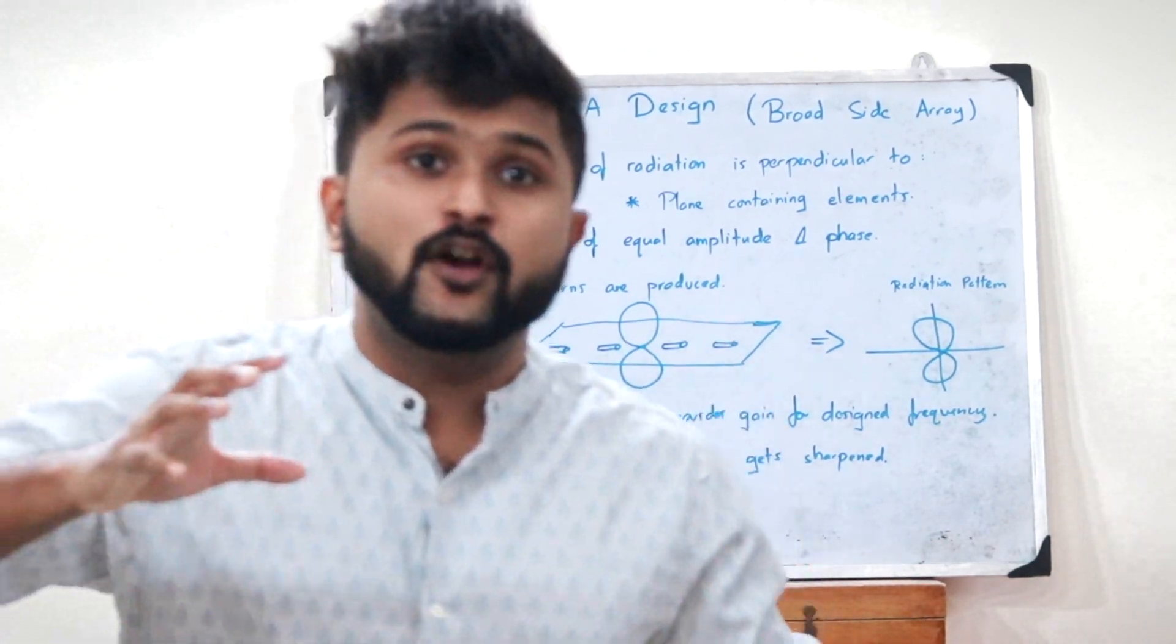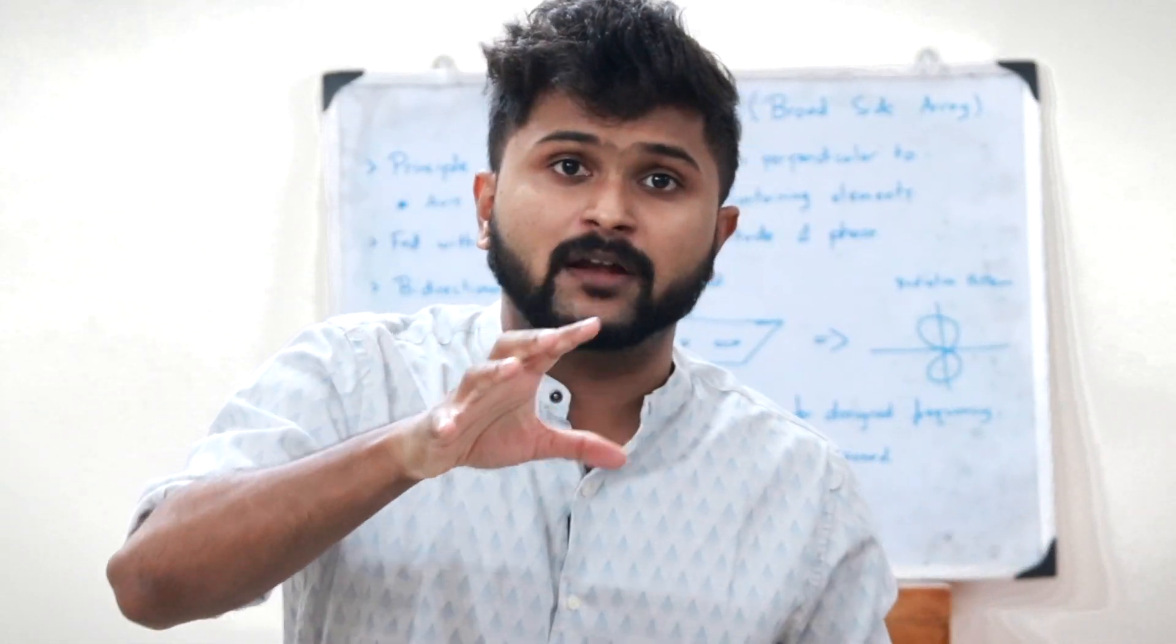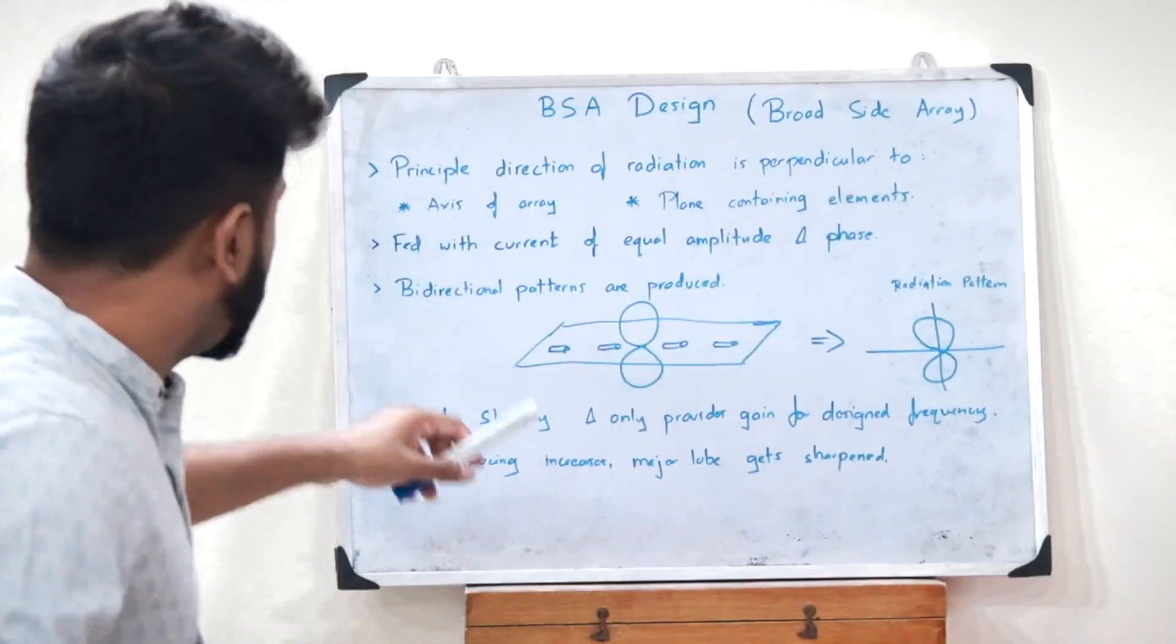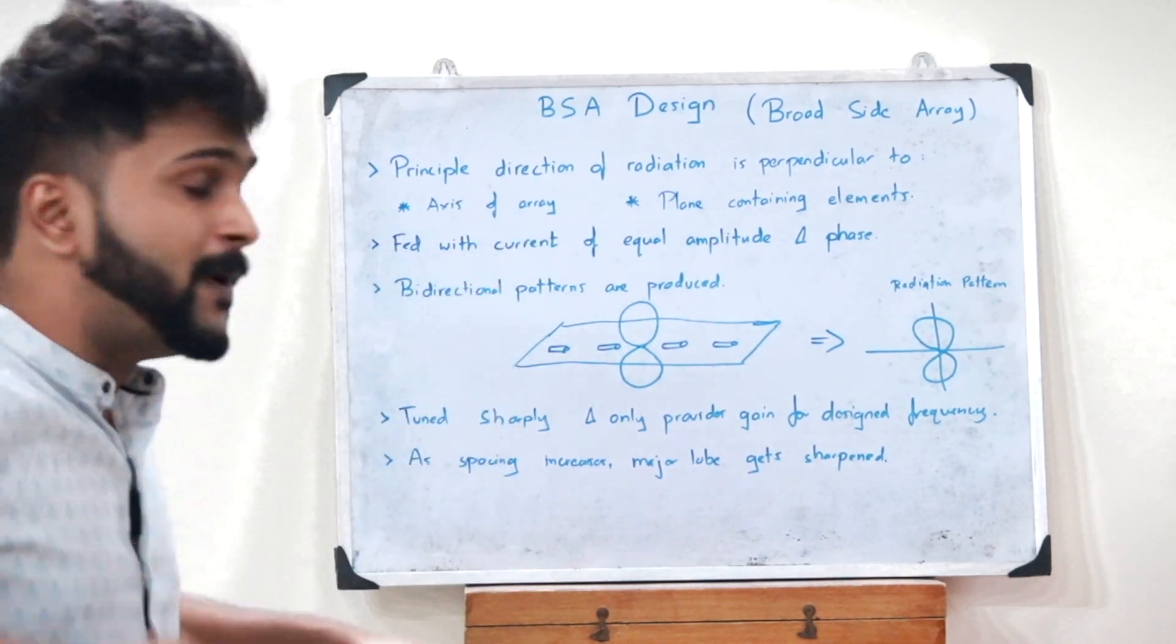Therefore, as a result of this, we obtain bi-directional patterns. So what do you mean by bi-directional patterns? That is, the patterns have two directions. So here I have drawn it out showing bi-directional patterns are produced.